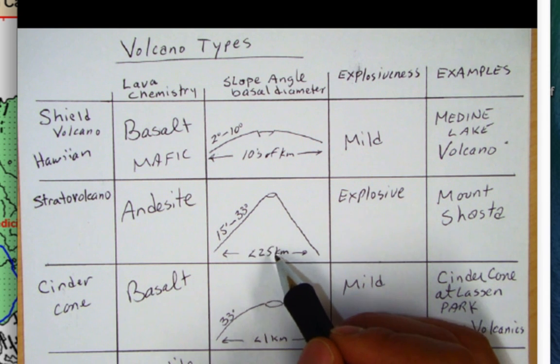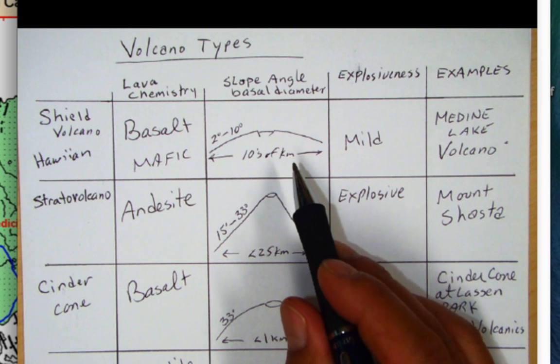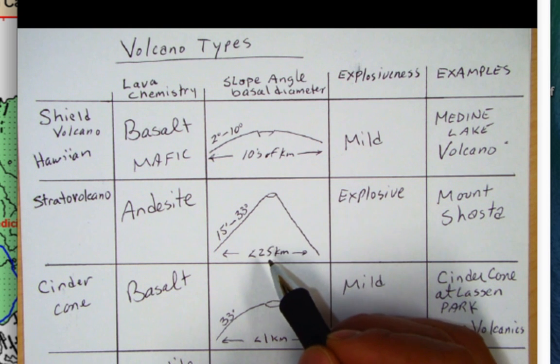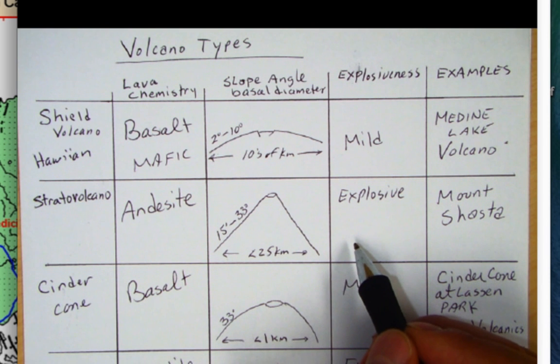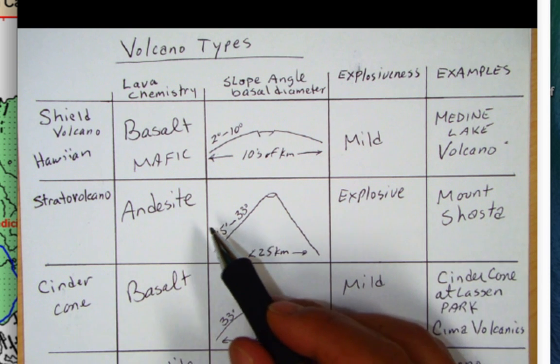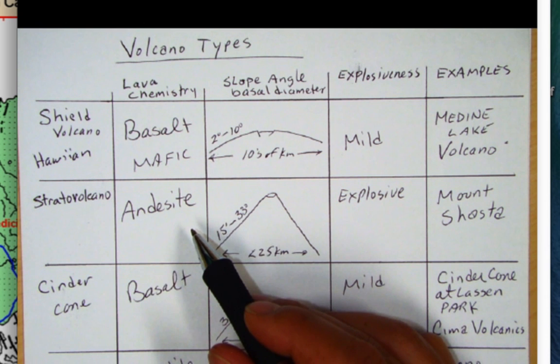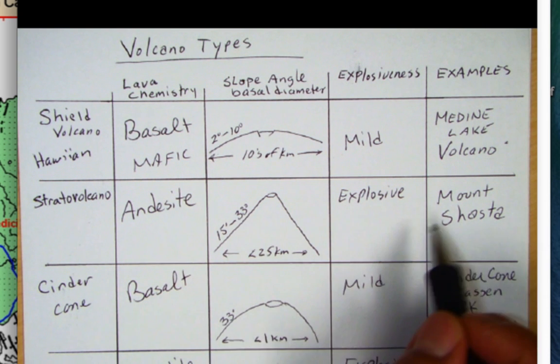Their basal diameter is about a quarter that of the shield volcano so about 20-25 kilometers here and they can be quite explosive because they're more felsic, they're intermediate than the basalt, and then Mount Shasta is a California example.